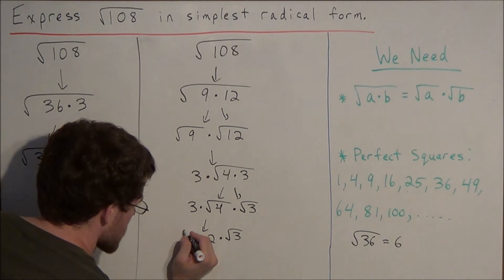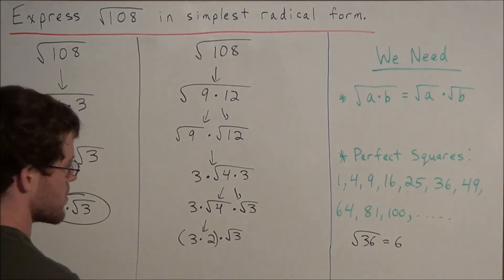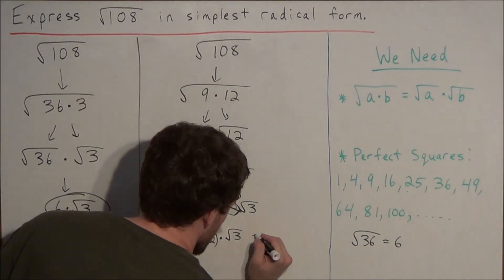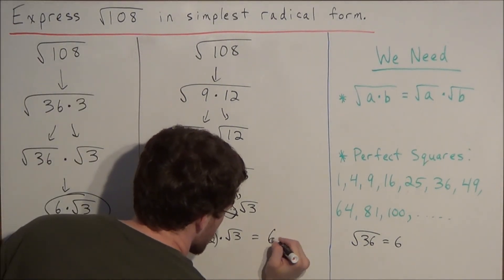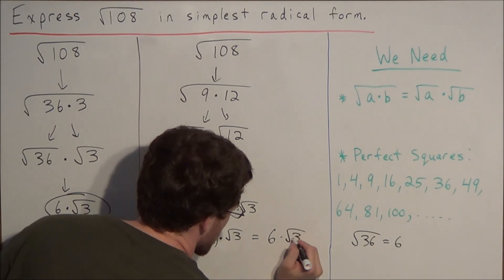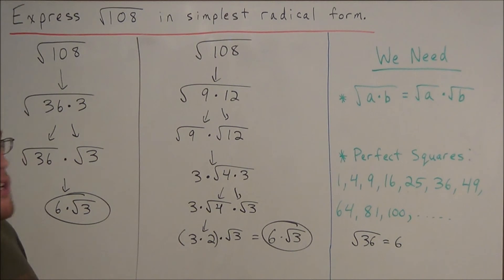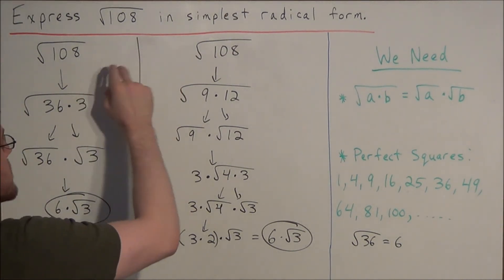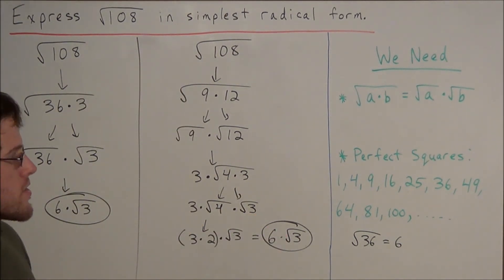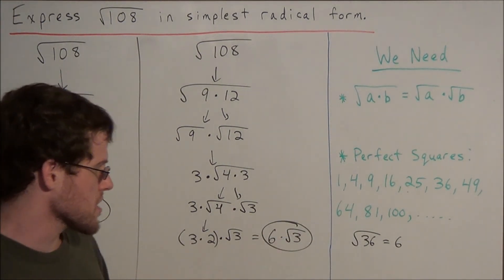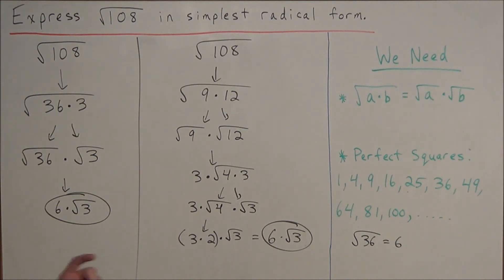The last step is to group these two terms together. We have 3 times 2 times the square root of 3. Simplifying, 3 times 2 is 6, so our final answer is 6 times the square root of 3. Notice how with both methods we arrive at the same answer. As long as we keep finding perfect square factors, we will get to the same answer every single time.